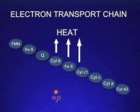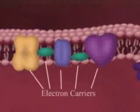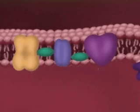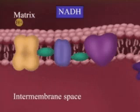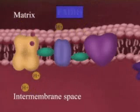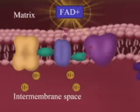How does the electron transport chain produce ATP? The carrier molecules use the energy from the electrons to actively transport protons from the matrix to the intermembrane space. This creates a proton concentration gradient.